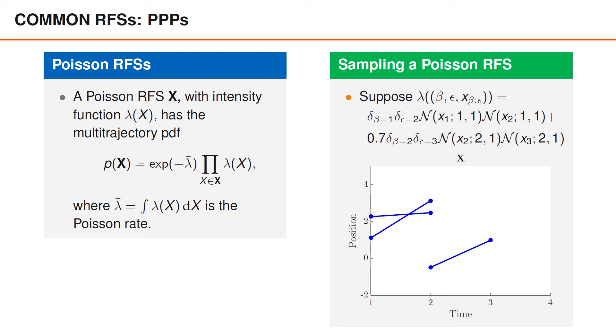Looking at samples from this Poisson point process, we can see that the number of elements varies considerably. As expected, we also obtain some trajectories that start at time 1 and end at time 2, and some trajectories that start at time 2 and end at time 3.